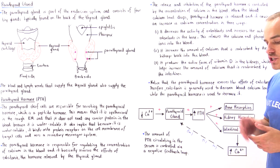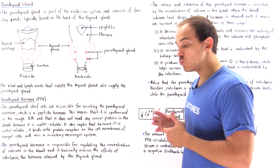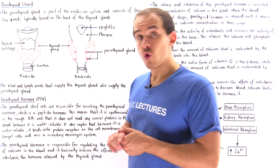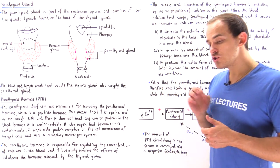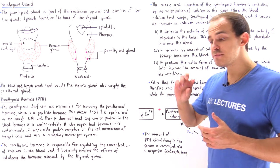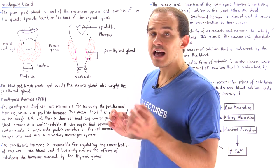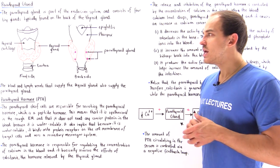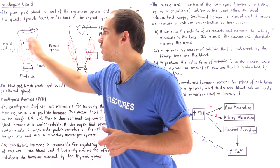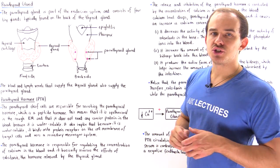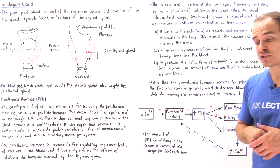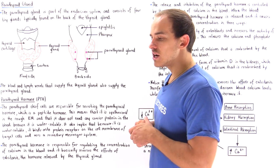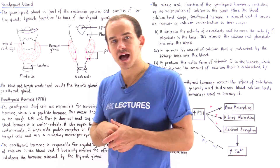The question is what exactly is the function and purpose of the parathyroid gland or the parathyroid hormone? The function of the parathyroid hormone is basically the opposite of calcitonin. Previously, we discussed a hormone that is produced by the thyroid gland known as calcitonin, and calcitonin is responsible for decreasing the concentration of calcium inside our blood.